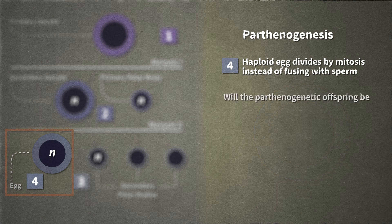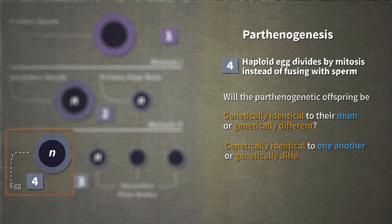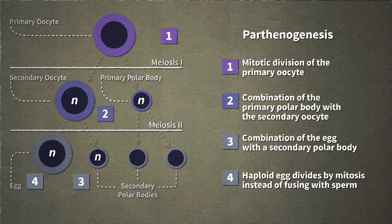Will the parthenogenetic offspring be genetically identical to their mom, or genetically different? Will the offspring be genetically identical to one another, or genetically different? Will the offspring be male or female? So, there are four different ways for parthenogenesis to take place to produce an offspring from a mum with no dad. Many animals develop this way, and some of them may surprise you. Stay tuned!